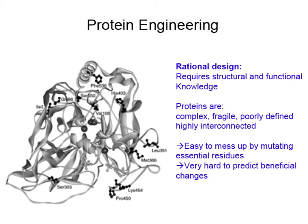In this lecture we'll talk about directed evolution. Protein engineering and rational design requires structural and functional knowledge. Proteins are complex, fragile, poorly defined, and highly interconnected. As a result, it's easy to mess up proteins by mutating essential residues, and it's really hard to even predict beneficial changes, even if you know the structure.